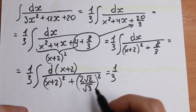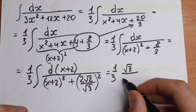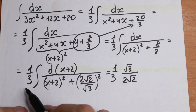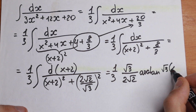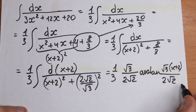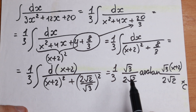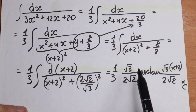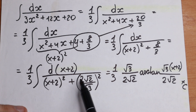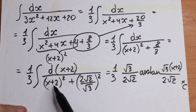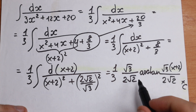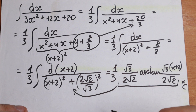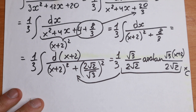Applying the arctangent formula, the constant 1 third combines with the factor square root of 3 over 2 square root of 2 from the formula. This gives us the result: square root of 3 over 2 square root of 2, times 1 third, times arctangent of (x plus 2) divided by (2 square root of 2 over square root of 3), plus C. This is the table case in higher mathematics — not the simple case, but the higher-level standard formula.